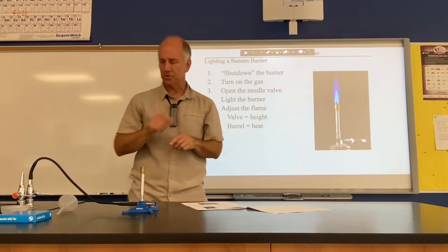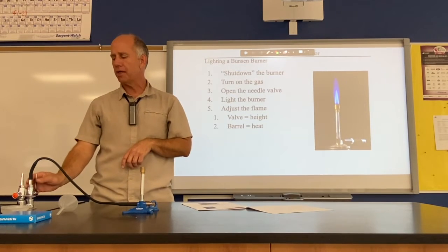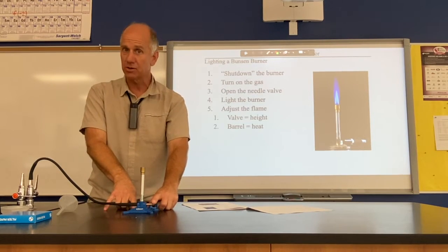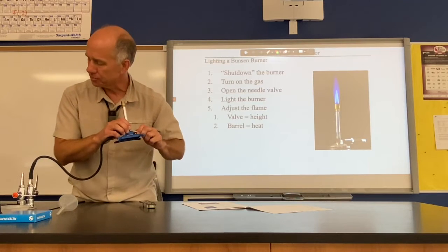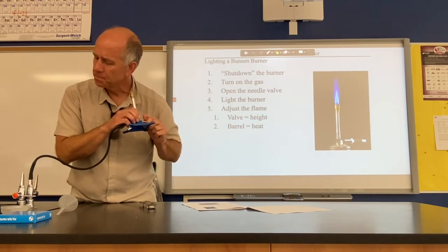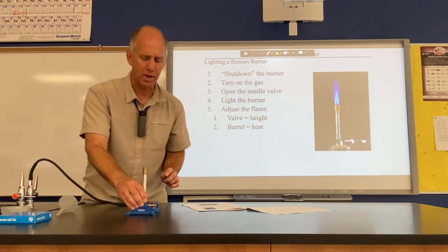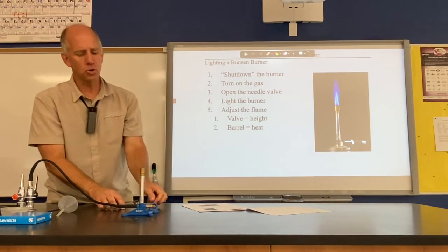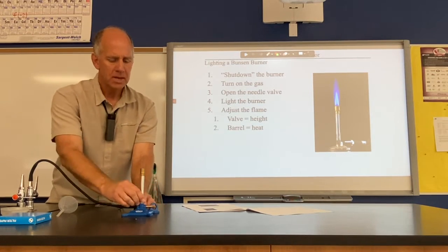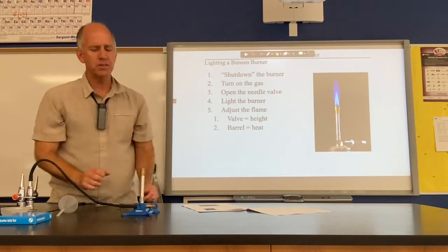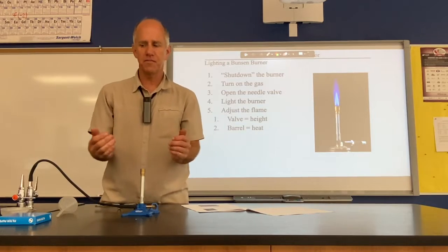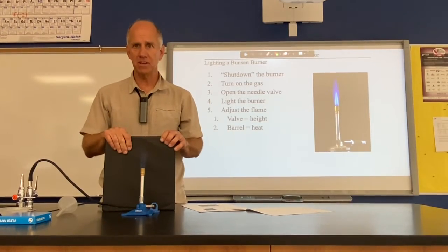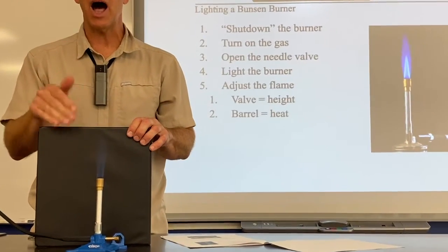Now we're ready to light the burners. Turn on the gas at the tap — gas is not flowing yet because the needle valve is closed. Open the needle valve and you can actually hear the gas flowing. Then come to the burner from the side and light it. When you first light it, the flame is flickering and that is not a hot, efficient flame.